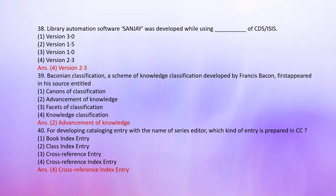Number 38: Library automation software Sanjay was developed while using CDS/ISIS. Options: 1. Version 3.0, 2. Version 1.5, 3. Version 1.0, 4. Version 2.3. The correct answer is 4: Version 2.3.